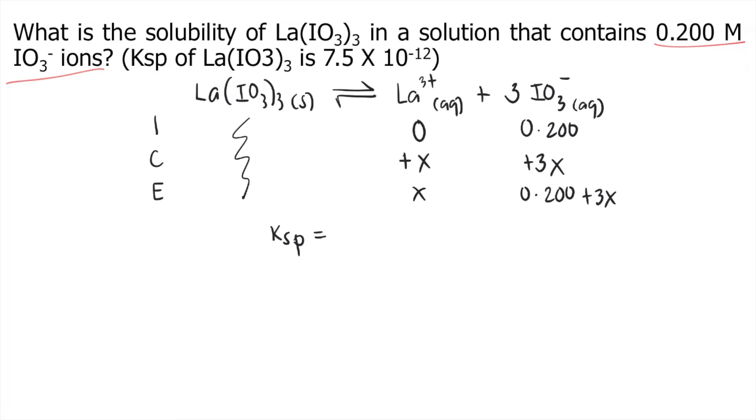Ksp is products divided by reactants. So our products are La³⁺ and IO3⁻ (remember to raise it to 3 because of the coefficient). Divided by the product—since our reactant is solid, you don't include that in the Ksp expression. So this is our Ksp expression.